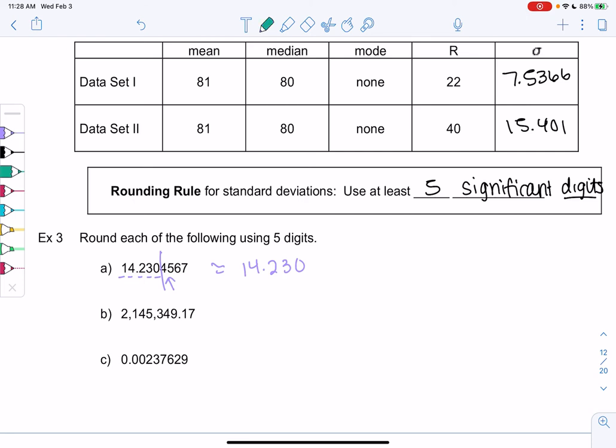We have 2,145,349.17. And we want 5 digits. So again, we start from the left. 1, 2, 3, 4, 5. And then we can round after that. So we're rounding to the hundreds place. So the 4 and the 9 disappear, but those place values can't go away because 3 is in the hundreds place.